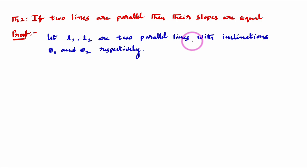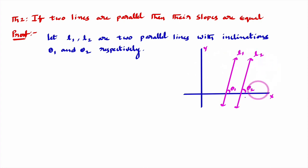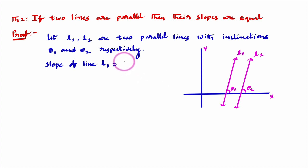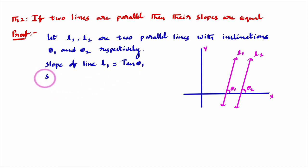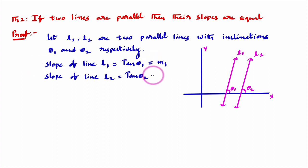Let L1 and L2 be two parallel lines whose inclinations are θ1 and θ2 respectively. From the diagram, the inclination of line L1 is θ1 and the inclination of line L2 is θ2. Slope of line L1 is tan θ1, and slope of line L2 is tan θ2. I'll denote the slope of line L1 as M1 and slope of line L2 as M2.